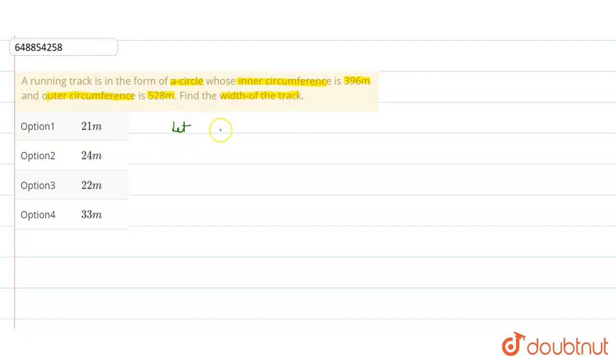Let the radius of inner circle be r meter and the radius of outer circle be R meter. What do we need to find out? Width of track is equal to R minus r meter.